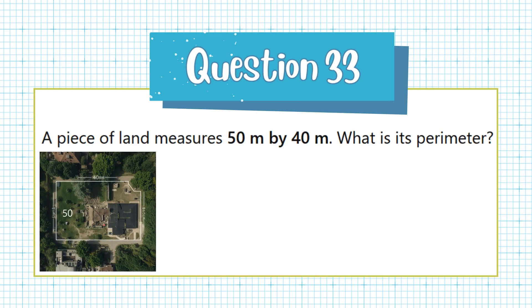Question 33. A piece of land measures 50 m by 40 m. What is its perimeter?